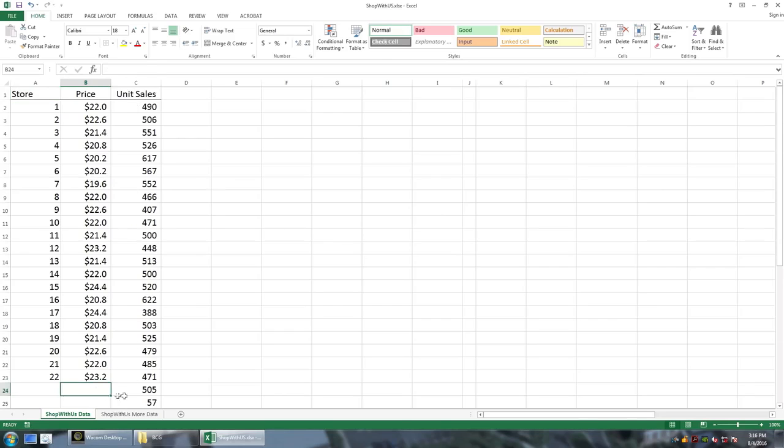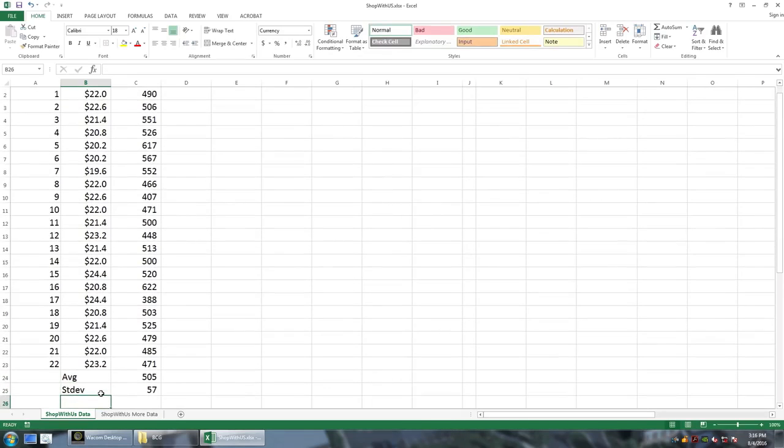We can also see here a calculation of the average, which comes out to be 505, 505 units. And we can see a calculation of the standard deviation. I'll just write these out so we keep track.